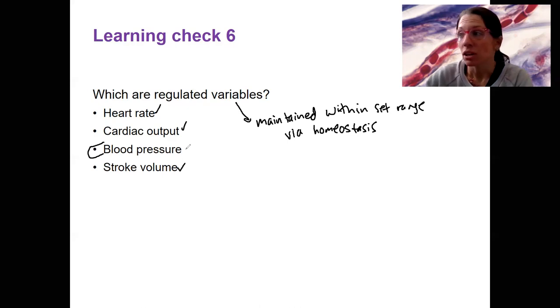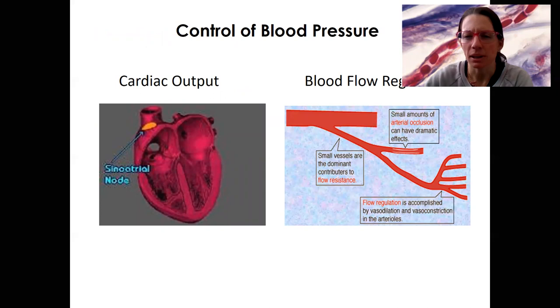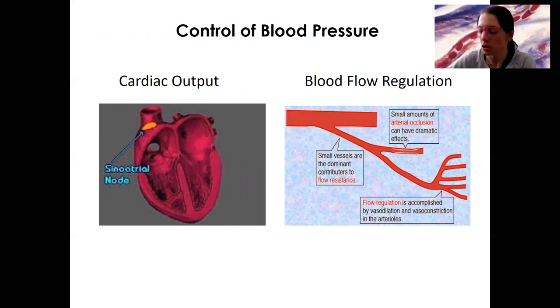So on that note, let's introduce the control of blood pressure, which is the last topic of this week. It's a big one though. And there's two different aspects to regulation we're going to talk about. One is central control, so control of MAP, mean arterial pressure. That's going to be what I'm going to start with right now.